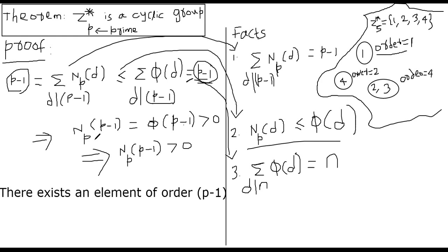We know for sure that Euler's totient function is always positive — never 0 — which means np(p minus 1) is greater than 0. This means we can be sure there must exist an element of order p minus 1. If such an element exists, it must generate all the elements of z*p, because the order of the group z*p itself is p minus 1. That is the proof.